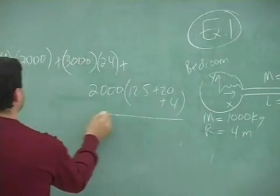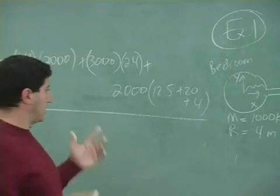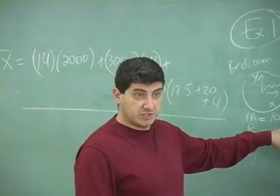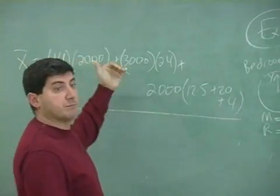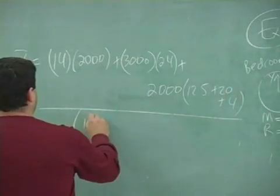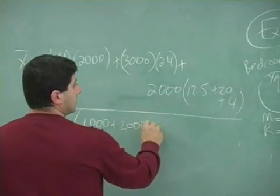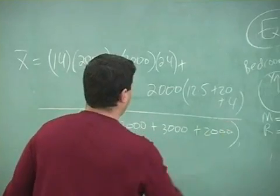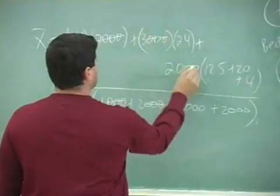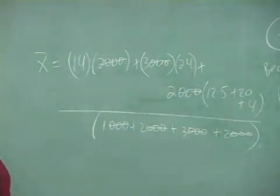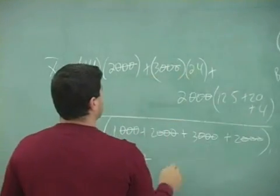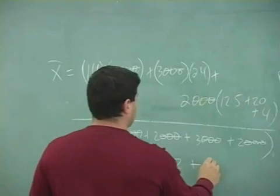Then I divide by the mass of the whole system. Remember, the 1,000 kg object's center of mass was zero so it didn't appear in the numerator, but you have to account for it in the denominator: 1,000 + 2,000 + 3,000 + 2,000 + 2,000. I can get rid of all the trailing zeros. The center of mass is then: (28 + 72 + 2 × 36.5) divided by (1 + 2 + 3 + 2 + 2).